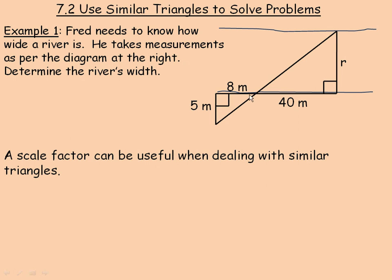This angle here and this angle here are opposite one another, so those two angles are equal. And this is a right angle, as is this one. So there are two equal pairs of angles in the two triangles, meaning they must be similar.